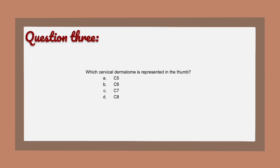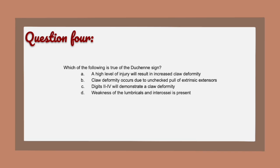Question 3: The correct answer is B — C6. This is something I frequently have to review. C5 corresponds more to the upper part of the arm. C7 is more correlated with the index and middle finger. C8 usually corresponds to the small finger. I recommend looking up cervical dermatomal charts — I use those all the time in practice.